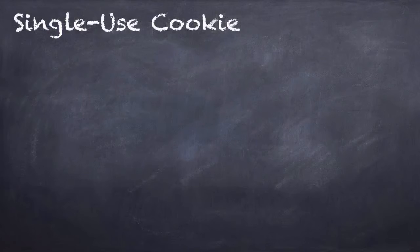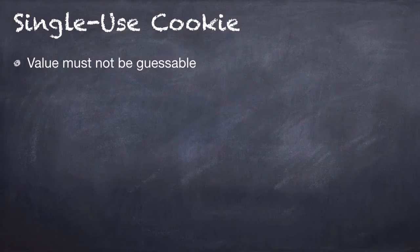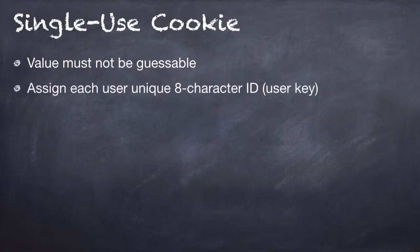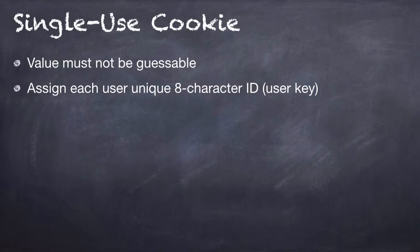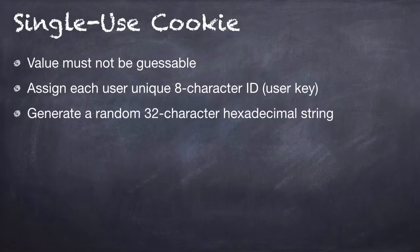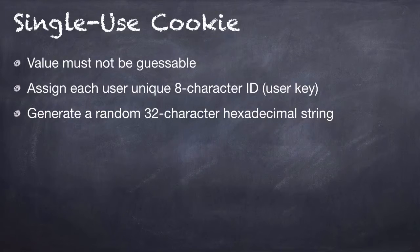Next, for the single-use cookies, values must not be guessable. So we need to use a unique 8-character ID as a user key for each user. And after assigning this, we're going to generate a random 32-character hexadecimal string — so not only the 8-character ID, but also a 32-character hexadecimal string.